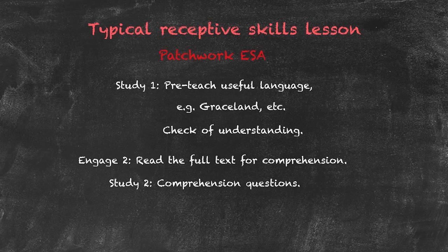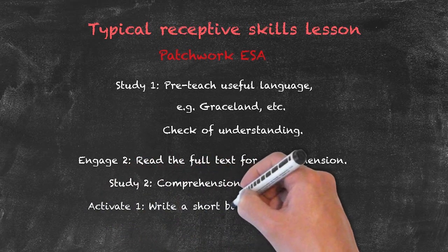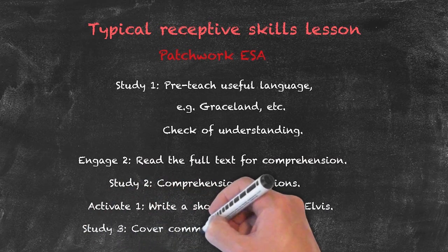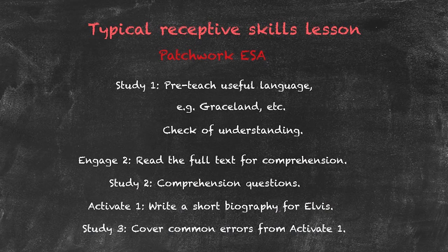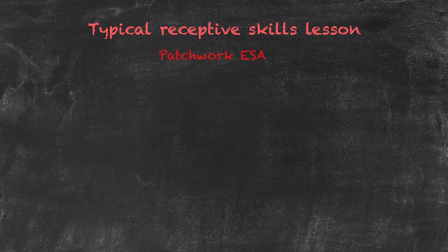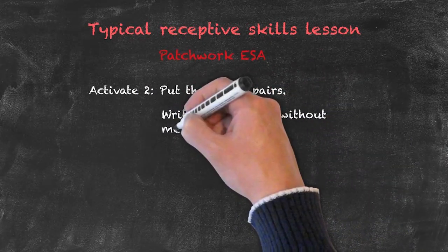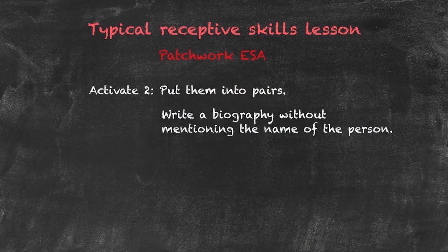Once they've completed the second study activity and we've gone through feedback and correction, we can go on to our first activate. In the first activate activity, we ask them to write a short biography for Elvis. On completion, they feed that back and we look at any common errors created from this activity and study those errors. We then go on to the final phase of the lesson — our second activate activity — where we put students into pairs and ask them to write an autobiography which doesn't contain the name of the person they're writing about. We then get them to read out their biographies and ask the class to guess who.